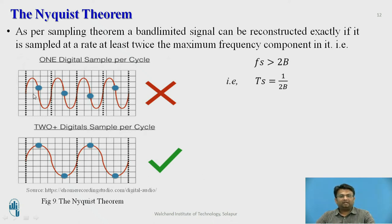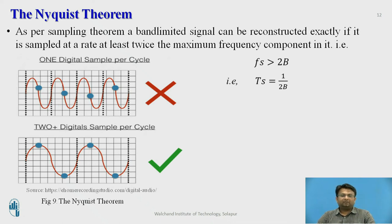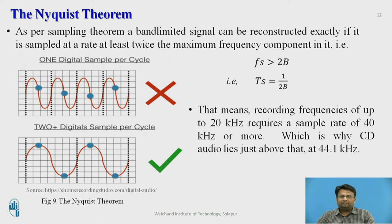The first diagram indicates sampling at the same frequency rate. Suppose a waveform has a frequency of 1 hertz — for one complete cycle, we have only one sampling instant, but in this case we had two sampling instants. It is clear that we can reconstruct the signal from the two-sample case, but not from the one-sample case. That is why the Nyquist theorem suggests using a sampling frequency twice the baseband frequency. This means recording frequencies up to 20 kilohertz will require a sampling rate of 40 kilohertz, which is called CD audio.